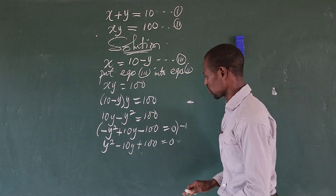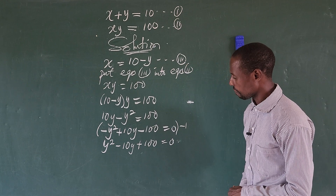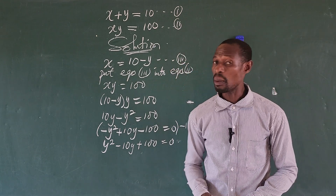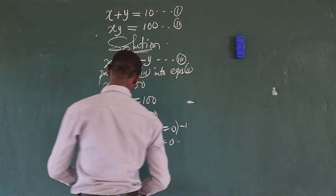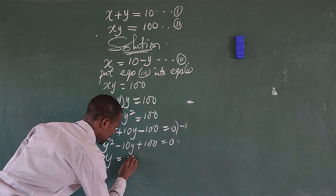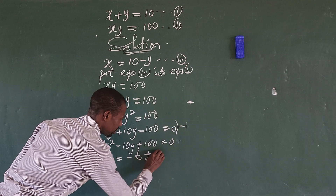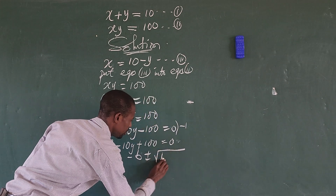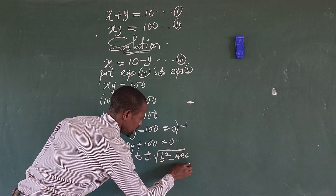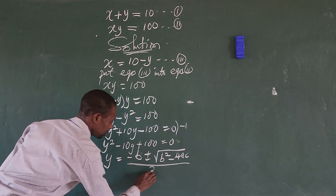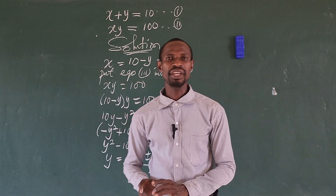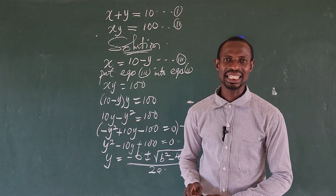We cannot use the factorization method here, so we will use the quadratic formula method. The formula gives us y equals minus b plus or minus the square root of b squared minus 4ac, all over 2a.